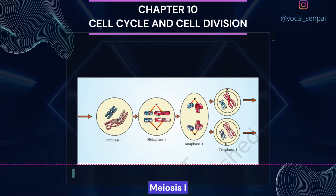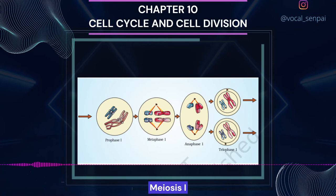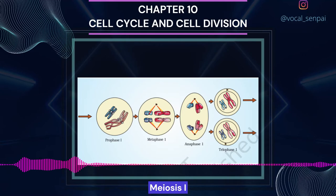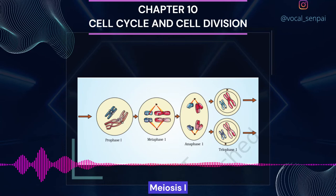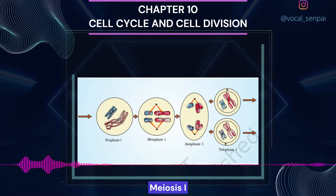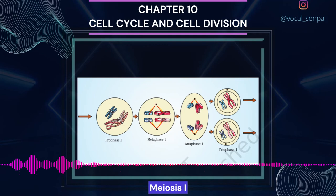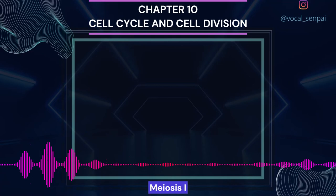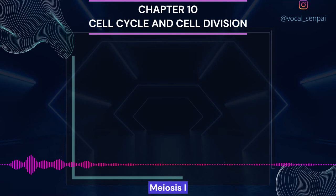Metaphase I: The bivalent chromosomes align on the equatorial plate. Microtubules from the opposite poles of the spindle attach to the kinetochores of homologous chromosomes. Anaphase I: The homologous chromosomes separate, while sister chromatids remain associated at their centromeres. Telophase I: The nuclear membrane and nucleolus reappear; cytokinesis follows and this is called a dyad of cells. Although chromosomes may undergo some dispersion, they do not reach the extremely extended state of the interphase nucleus. The stage between the two meiotic divisions is called interkinesis and is generally short-lived. There is no replication of DNA during interkinesis.